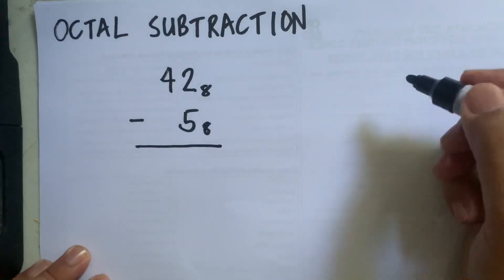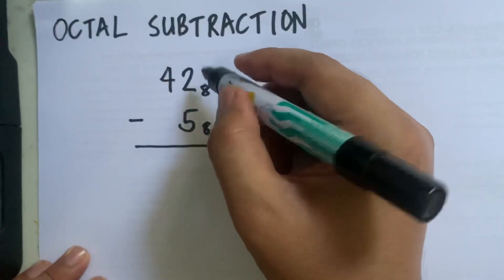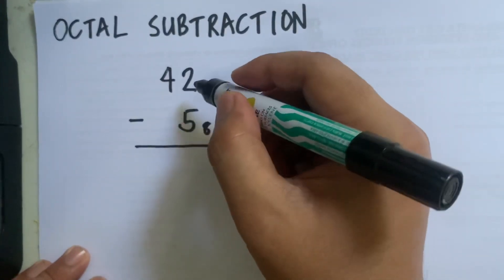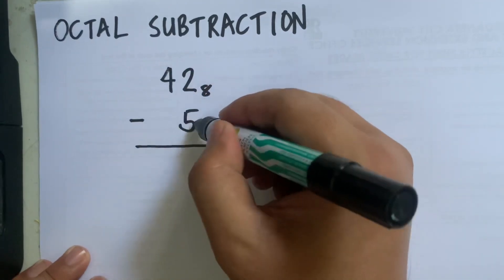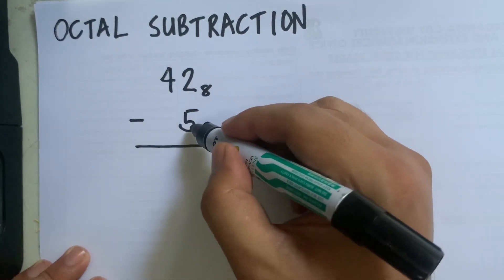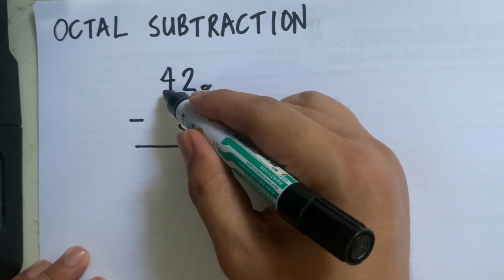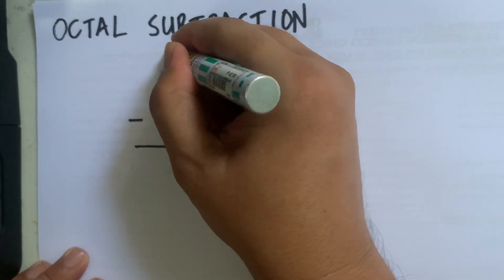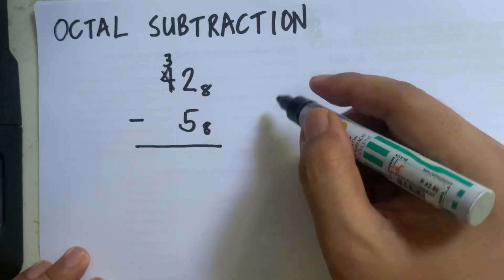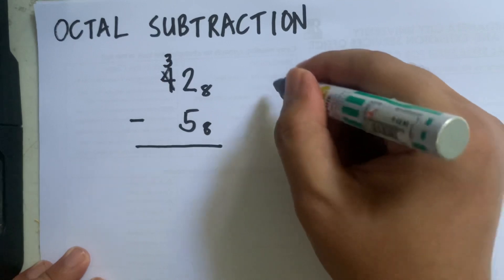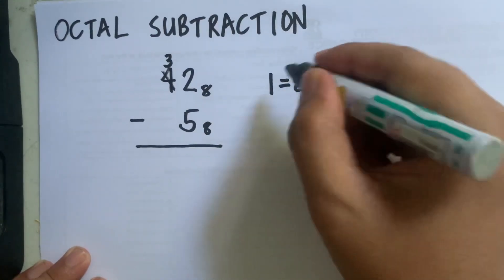To subtract octal numbers, we start operating at the rightmost digit. We have 2 minus 5 — 2 minus 5 cannot be done, so 2 will borrow 1 from 4, and 4 here becomes 3. Now in octal subtraction, each one borrowed is equivalent to 8.